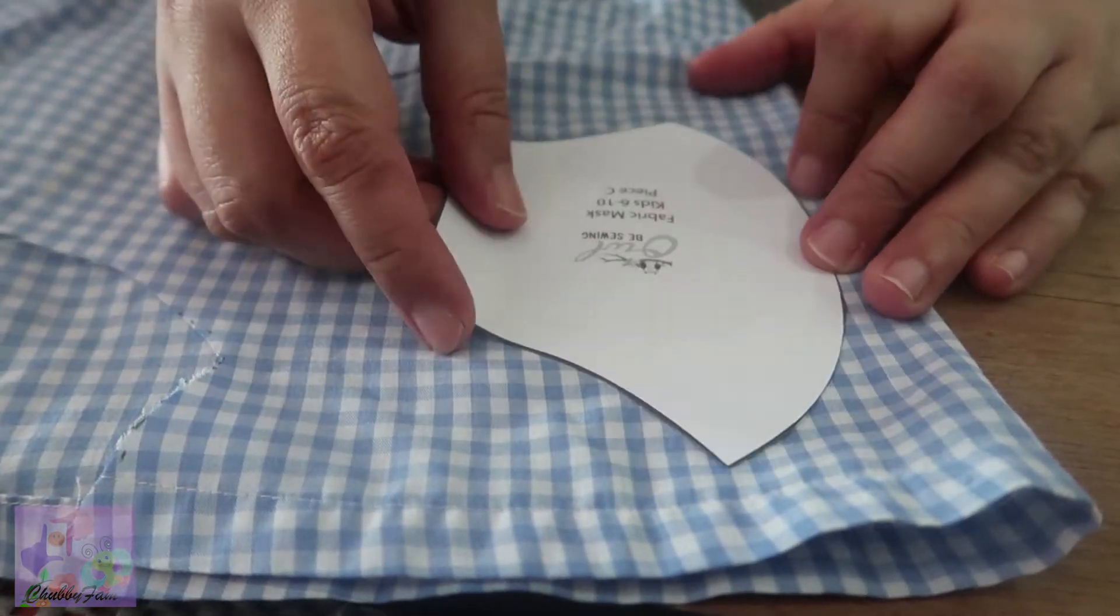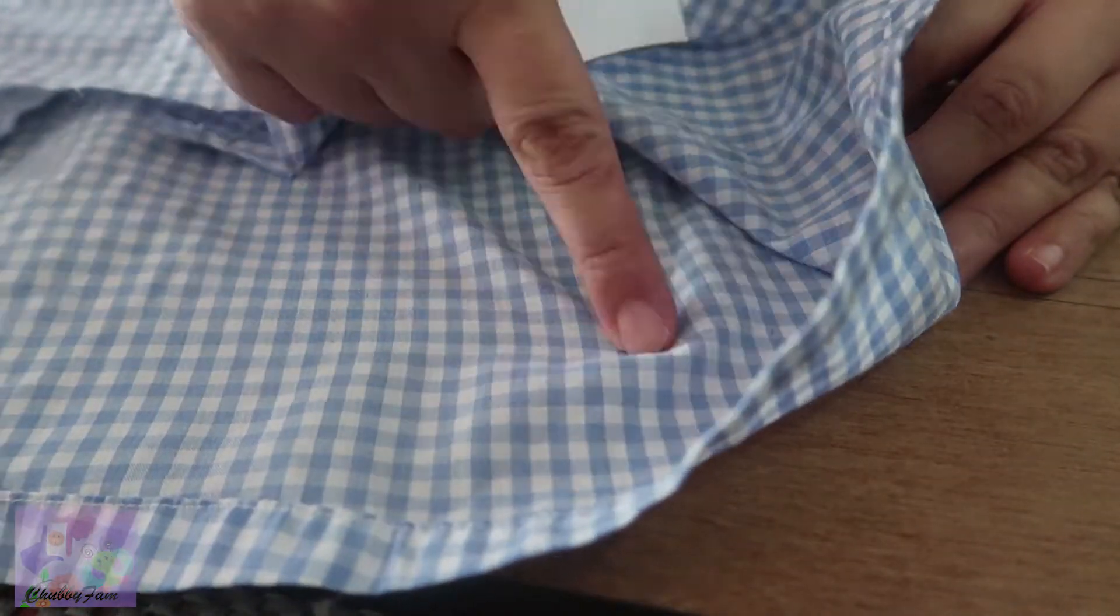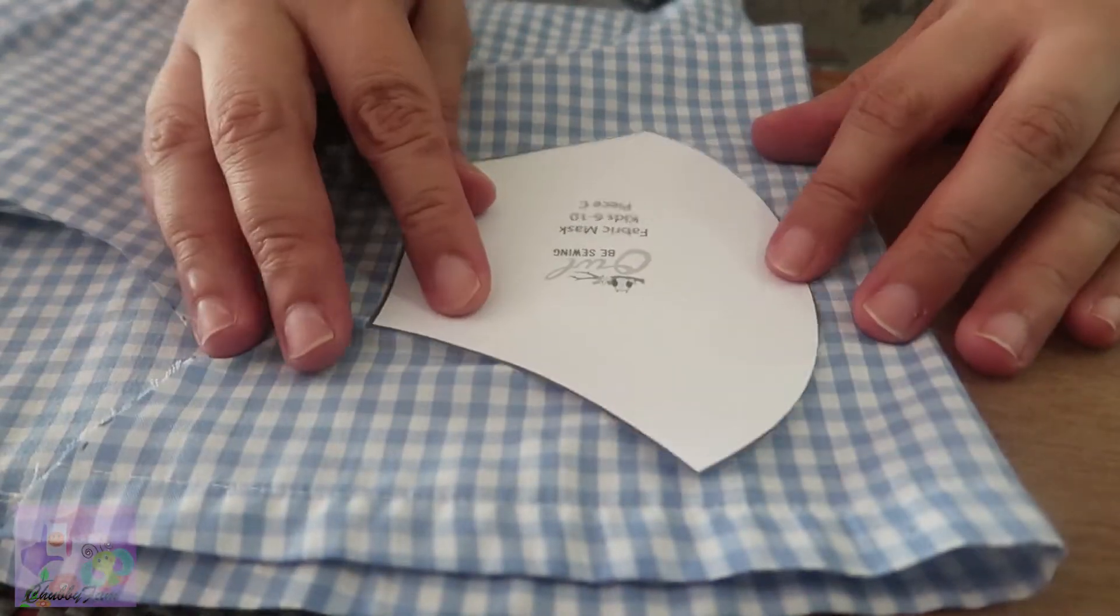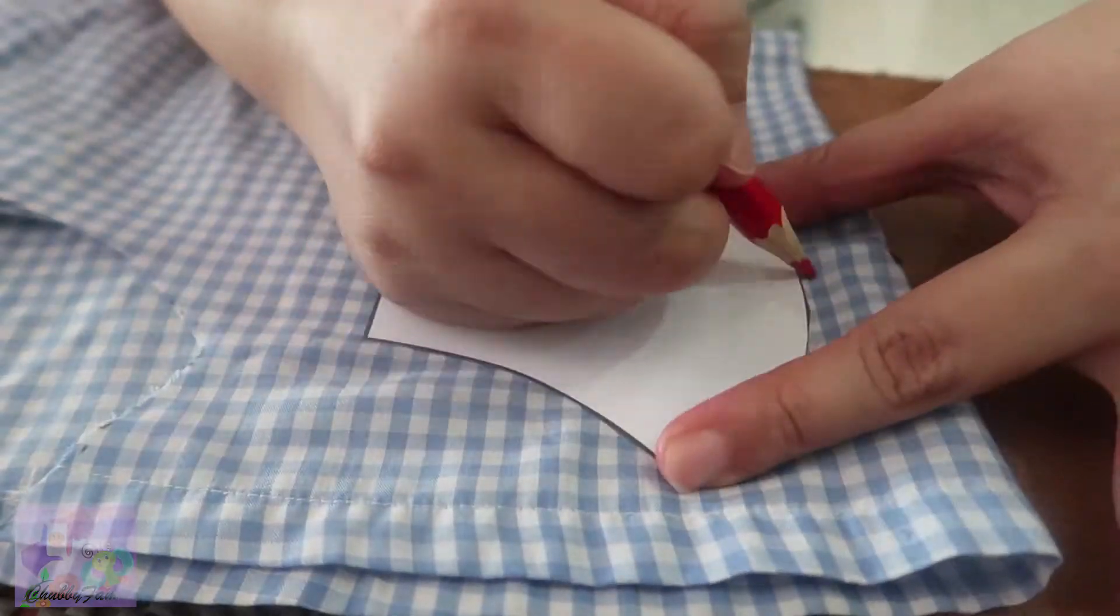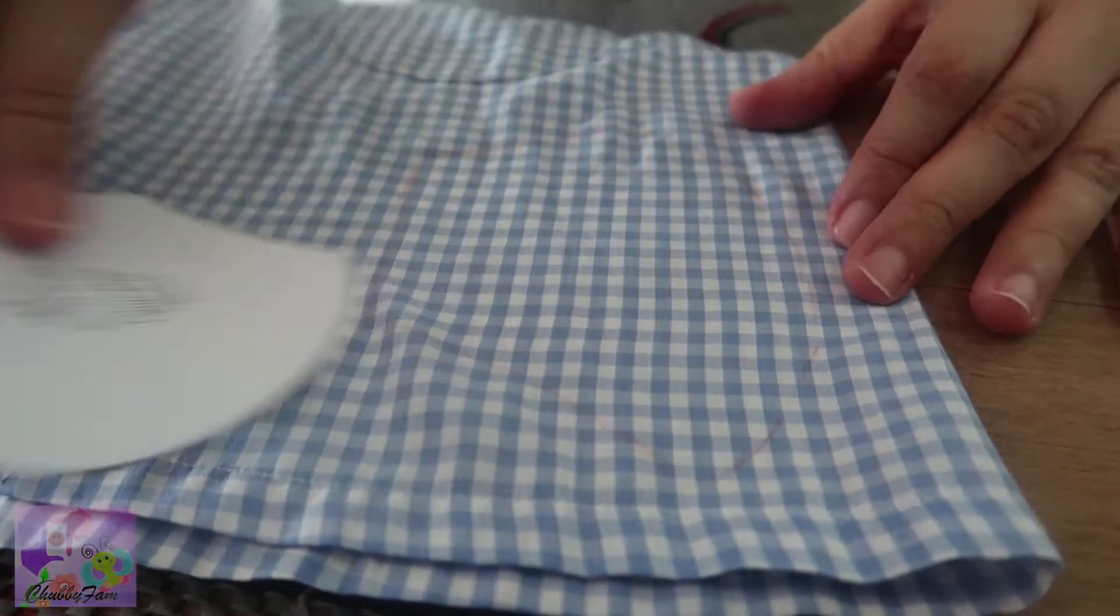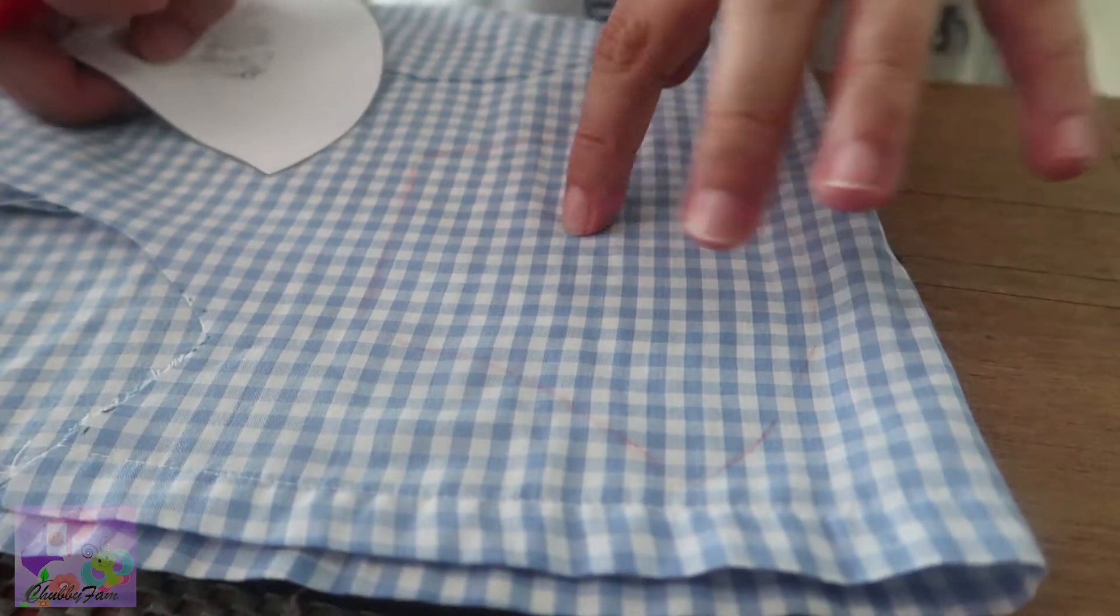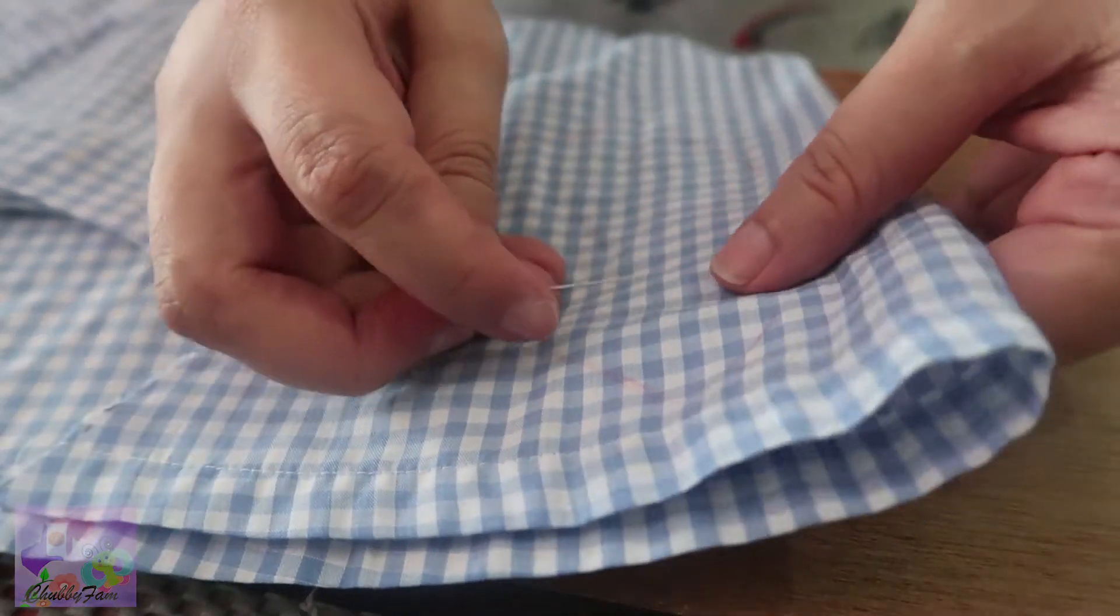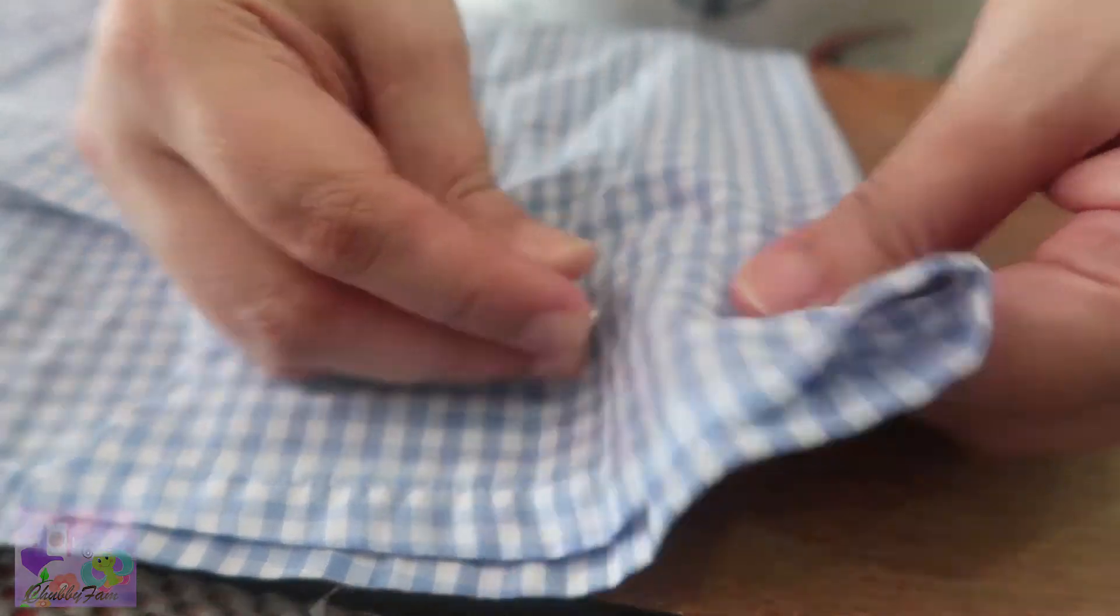So this one is for the pocket. These should be wrong sides together like that and we're going to trace it again. So we're going to cut this. We're going to put this again so that it's in place.